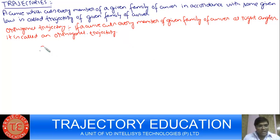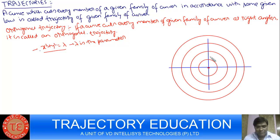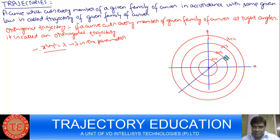The definition: if a curve cuts every member of a given family of curves at right angles, it is called the orthogonal trajectory. I will give you an example. Suppose we have a family of concentric circles where lambda is the parameter. So it represents a family of concentric circles. Let me draw the concentric circles first.